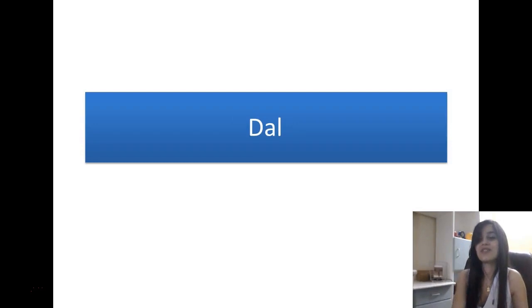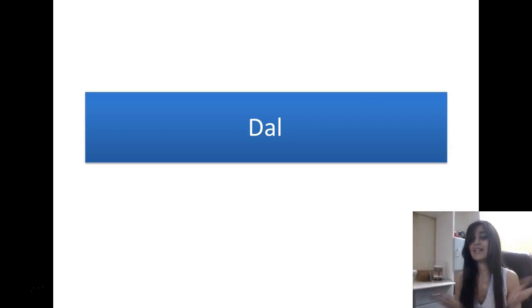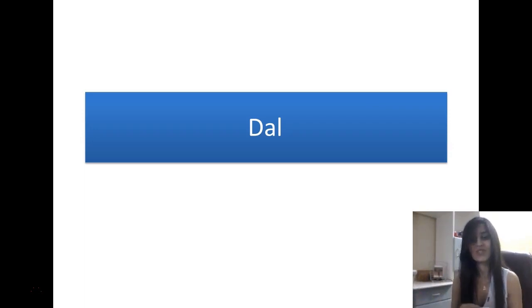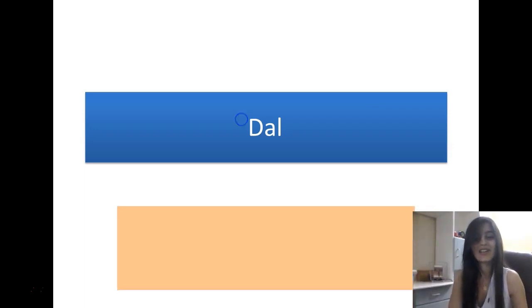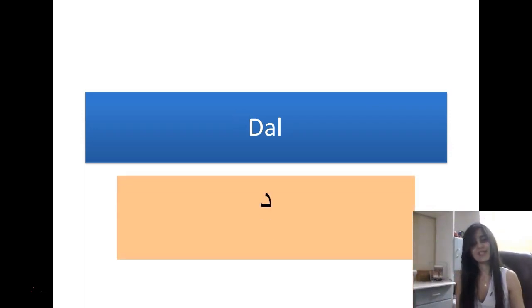Now we have the next letter which is DAL, which is just like a D in English. DAL. And we write it like this. This is the shape of the DAL.